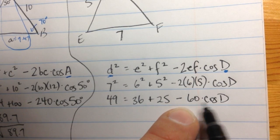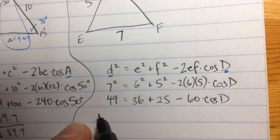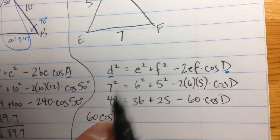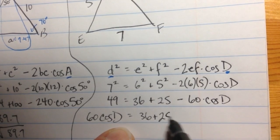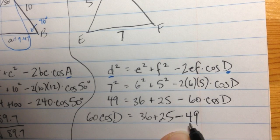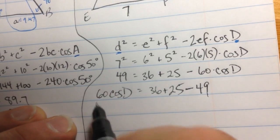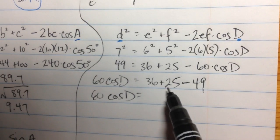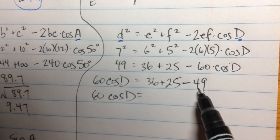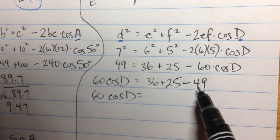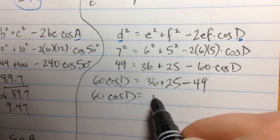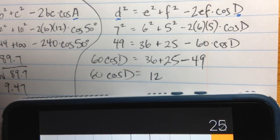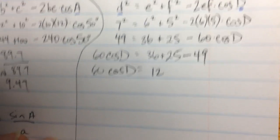So let's do that. I'm going to actually add 60 cos D to both sides, and subtract 49 from each side. So let's keep going. 60 cos D equals 36 plus 25 is 61 minus 49. 61 minus 49 is 12. Is that right? I'm going to double check, because it's late and I'm tired. 36 plus 25 minus 49. Okay, it is 12. That's good.